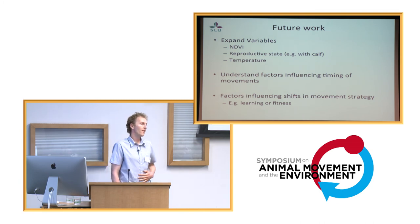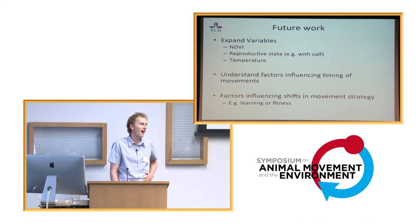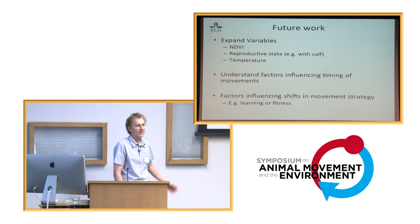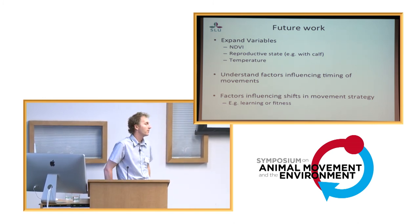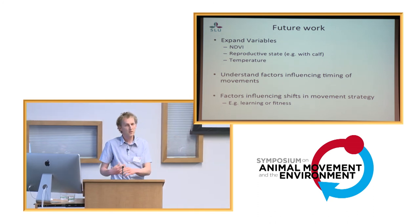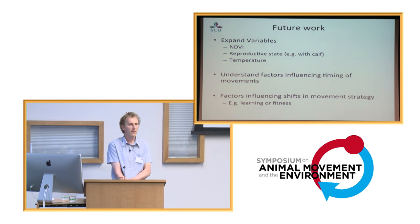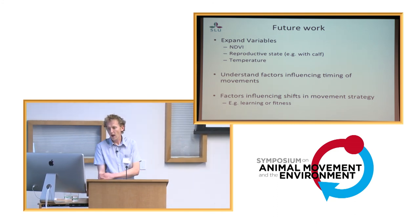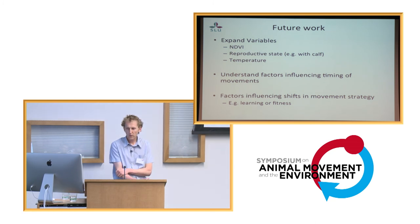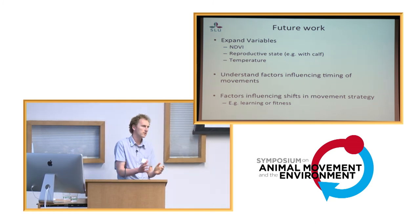For future work — NDVI is clearly missing from this presentation and is something we will include, along with temperature and the relation between snow, temperature, and NDVI. We also want to look at reproductive state — for example, if a female is with calf, how does this affect her movements? And as I was discussing with the snow data, understanding the factors influencing migratory movements and what may be causing shifts in movement strategy from migratory to sedentary — for example, could it be learning, or whether the individual is fit enough to complete the migratory journey?